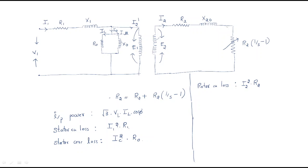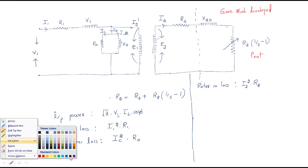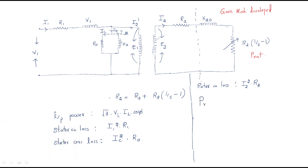The resistance r2 into (1/s minus 1) gives the rotor mechanical power developed. This complete area represents the gross mechanical power developed. Particularly, this area gives the net power. The net power is obtained from the gross mechanical power developed by removing the frictional and windage losses.